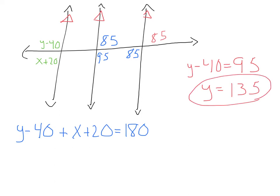I've also got this x plus 20, alternate exterior with 85. So I know that x plus 20 has to equal 85 because alternate exterior angles are congruent. So if I solve for that, I'm going to get x equals 65.